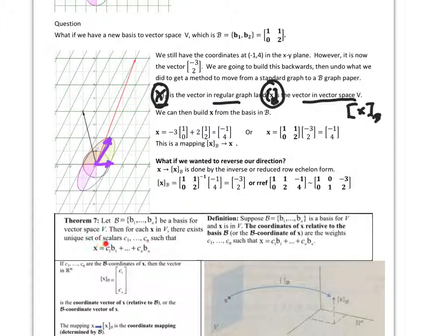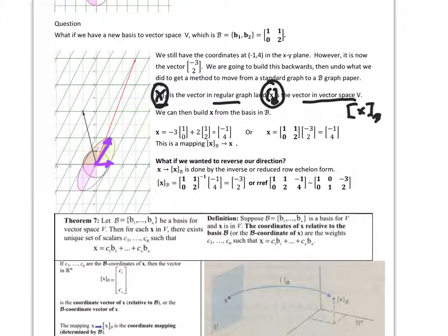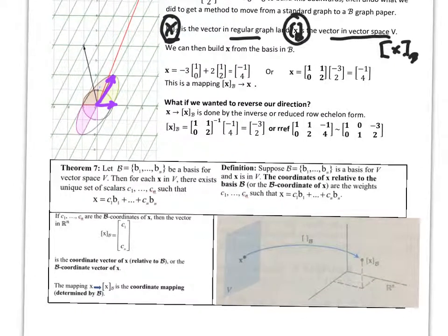Theorem 7: Let B = {b1, ..., bn} be a basis for vector space V. Then for each x in V, there exists a unique set of scalars such that x equals c1*b1 + ... + cn*bn. That's exactly what we did — the scalars were negative 3 and 2, times b1 and b2, which gives us our x value. We can take these scalars c1, c2, ... and put them into a matrix and use them in that form.